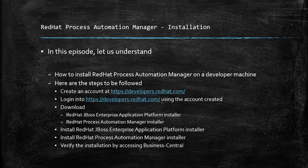Here are the steps to be followed. First, create an account at developers.redhat.com. Only when you have an account created will you be able to download the installers for Red Hat Process Automation Manager. Create an account and then log in using that account into developers.redhat.com.